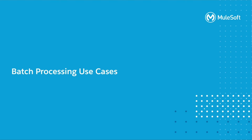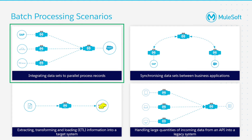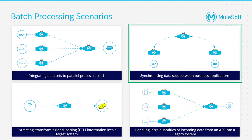What are some instances where batch processing might be relevant? Here we will go through some common use cases. Batch processing is particularly useful when integrating data sets to parallel process records or synchronizing data sets between business applications. For example, syncing contacts between NetSuite or SAP and Salesforce. This model allows you to achieve near real-time data integration.